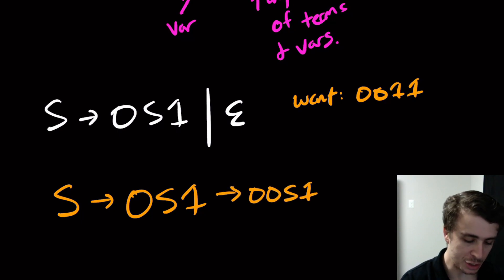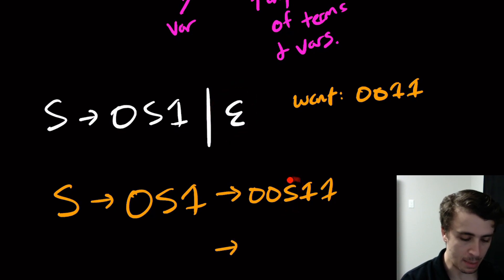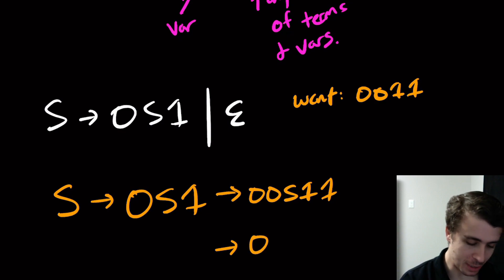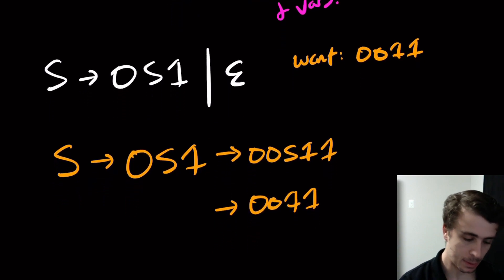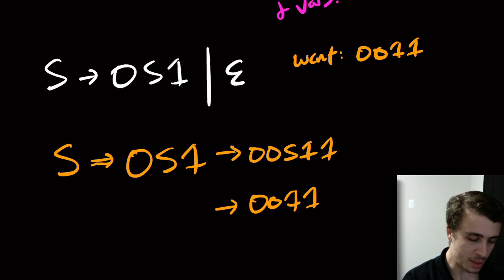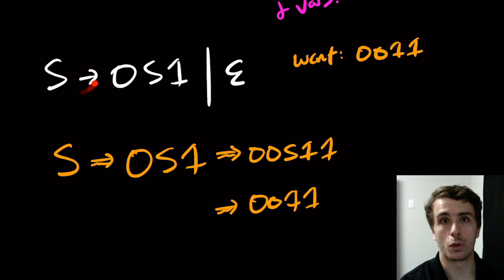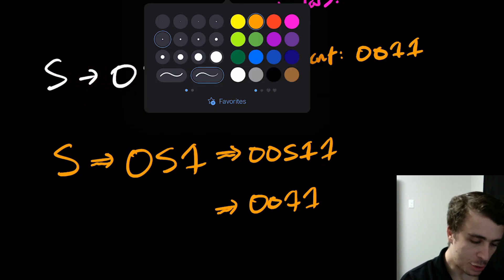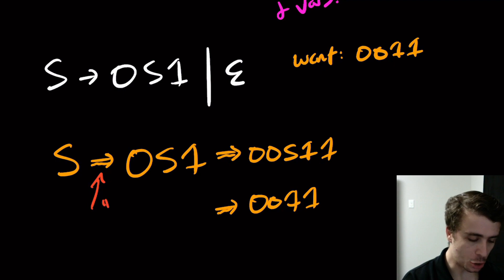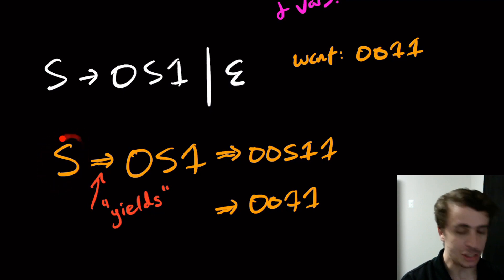I apply the rule again to get 00S11, and then finally I apply the other rule where S disappears — like a magician — to get 0011. The way this is written to avoid confusion is with a double-lined arrow instead of a single-line arrow, which is used for the rules. Each one of these steps is a rule application.